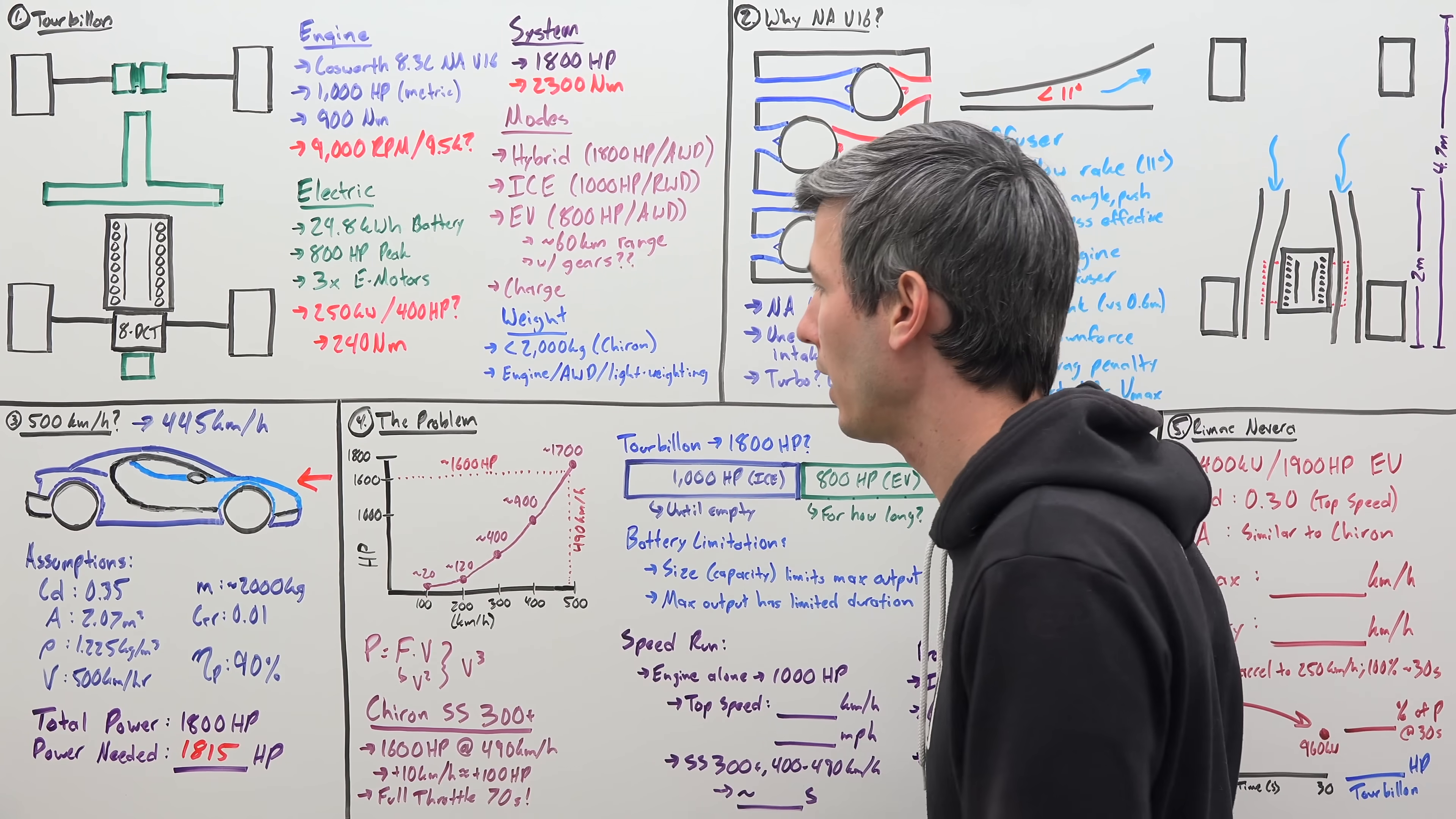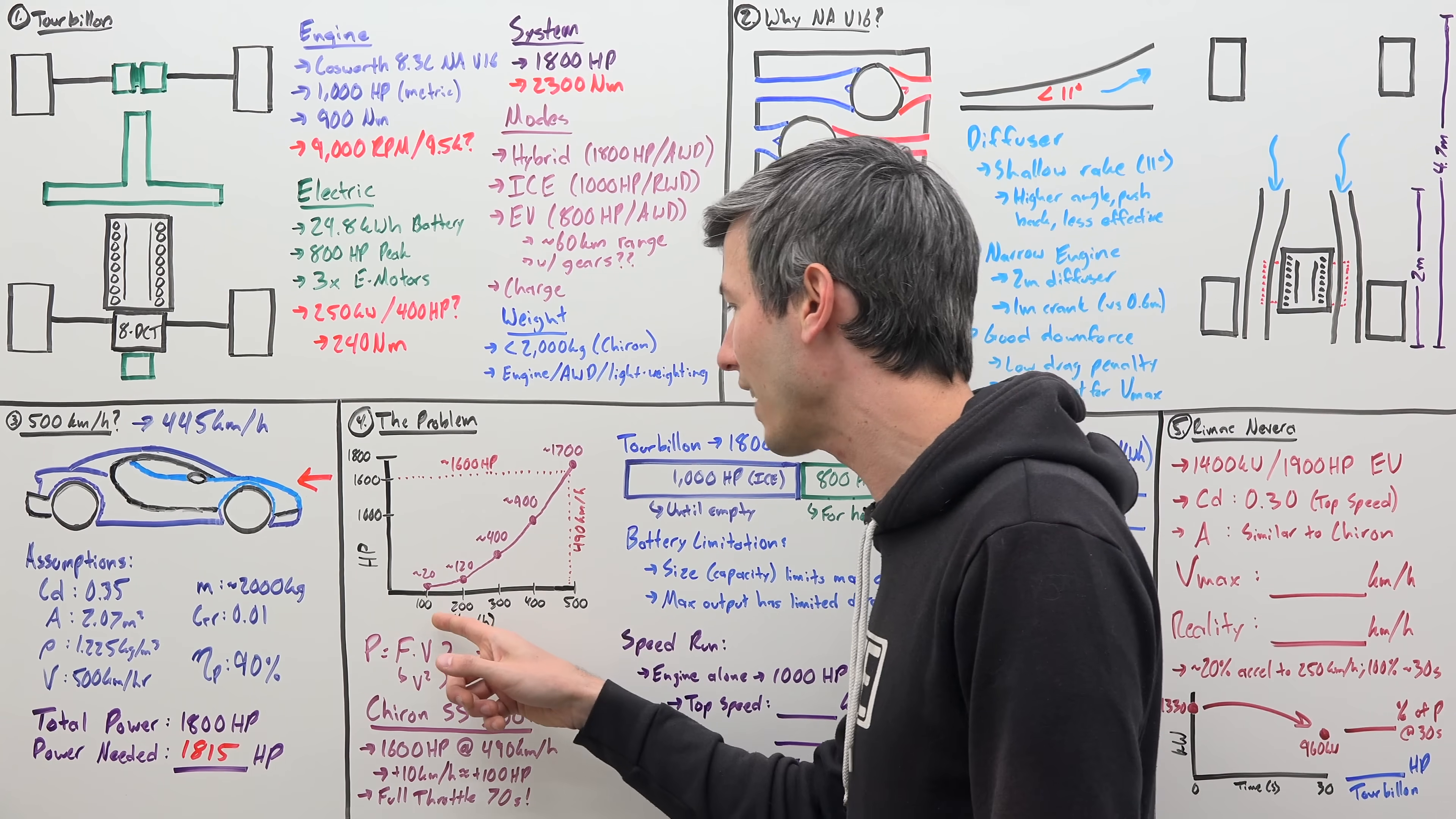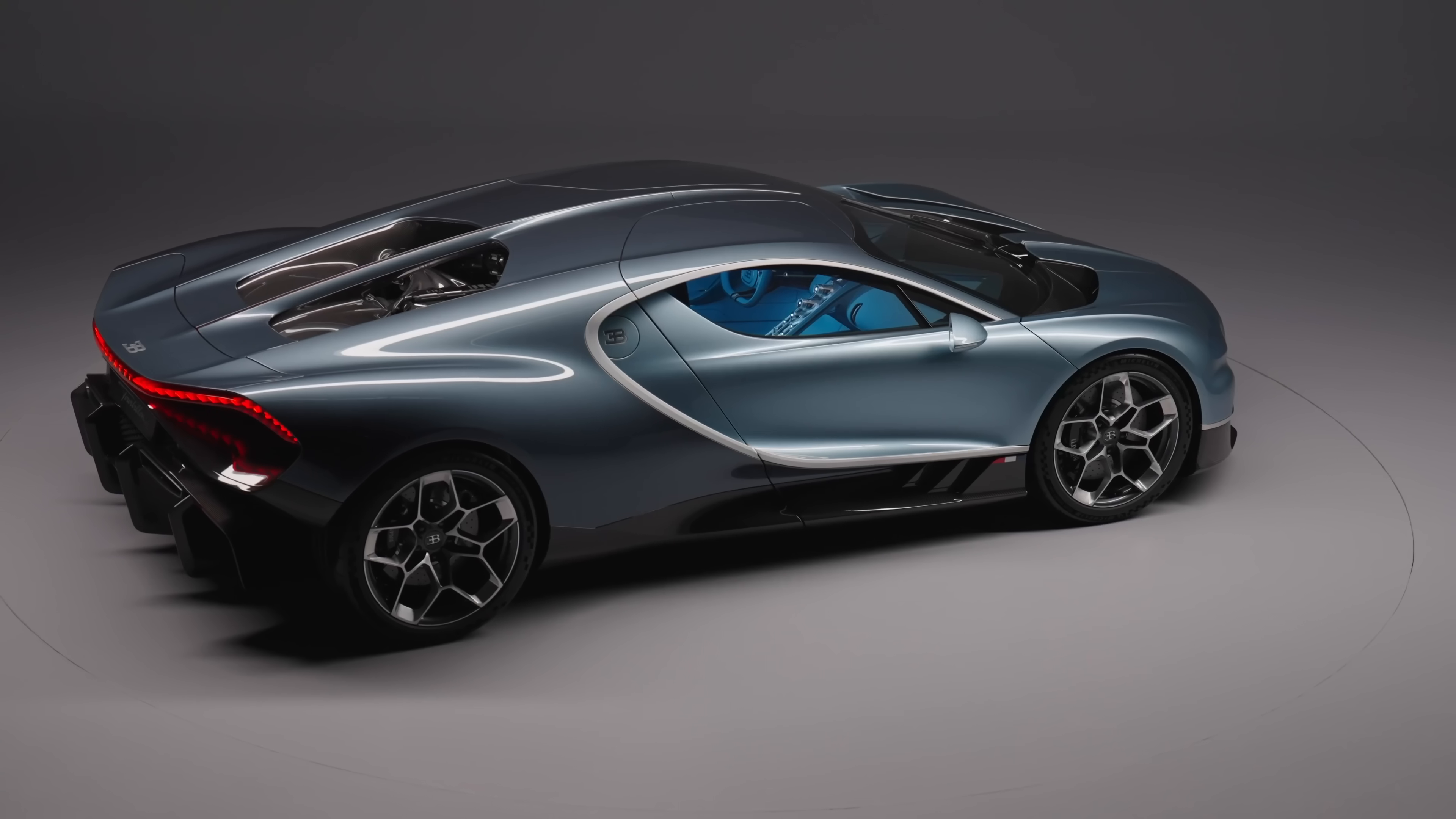Well, here we have a plot looking at horsepower versus speed, how much power is required to go a certain speed, of the Bugatti Chiron 300+. So the fastest version of the Bugatti Chiron. So you can see at 100 kilometers per hour, you only need about 20 horsepower versus at 200 kilometers per hour, you need 120 horsepower. So this function increases dramatically. Again, it's a function of velocity cubed.